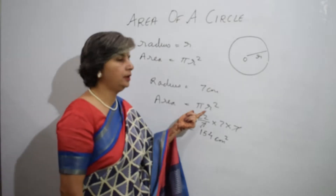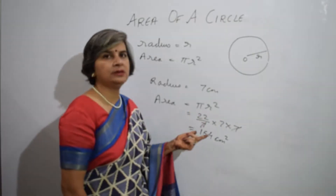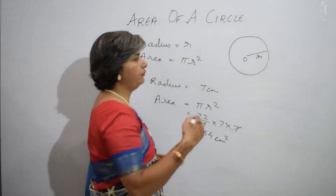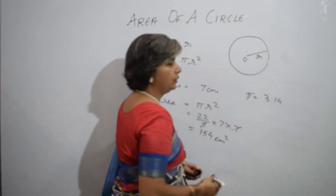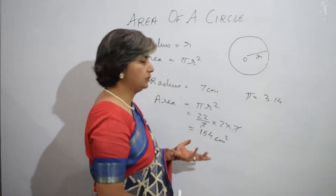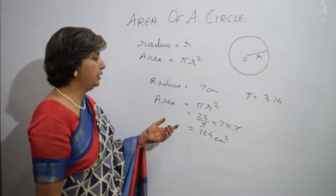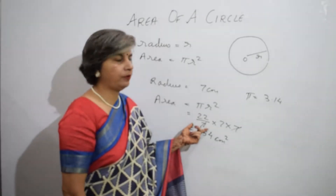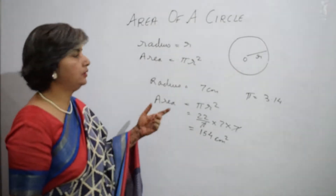To find the area of a circle we put the value of π. Pi is a constant and it is considered as 22/7. It also has another value: π is equal to 3.14. According to the question, whatever value is given for π we will use that value, but if no value is given, we will use the value 22/7.